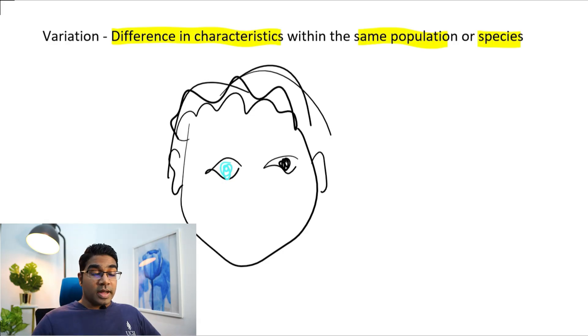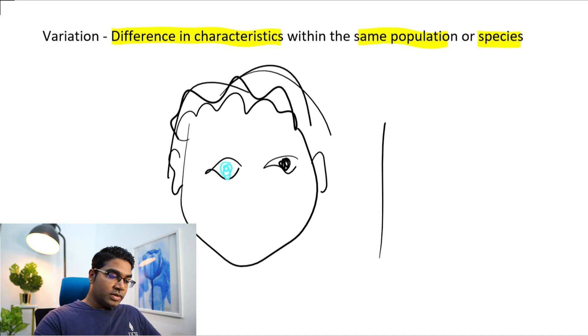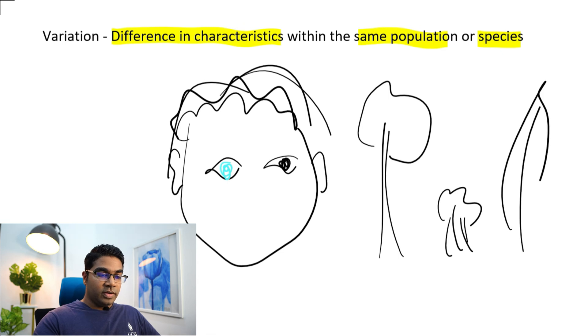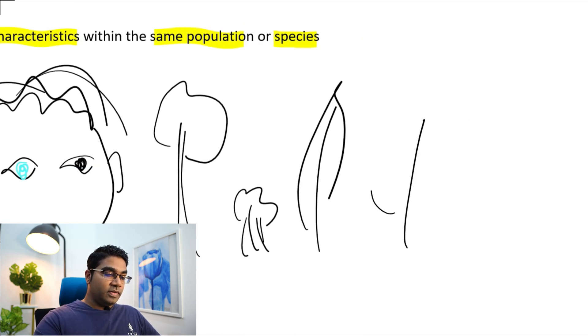This exists in the plant world as well. You will notice that some trees are very tall, some trees are very short, some trees have straight leaves, some trees have curly leaves with rough edges. These are all examples of variation.